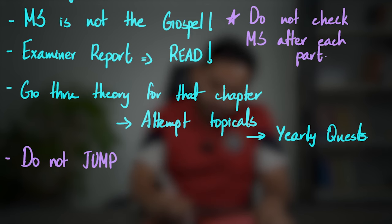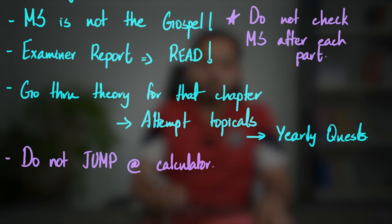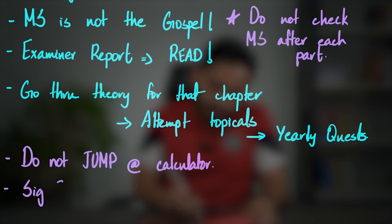Some general exam tips: do not jump to the calculator at the first sign of numerical values in a question. Remember, you are not the machine — the calculator is. First write out everything you know, set up the equation, clearly show which values you substituted for which variables, and then use the calculator. Also make sure significant figures are handled correctly — your answer should match the least number of significant figures given in the question, or one more.